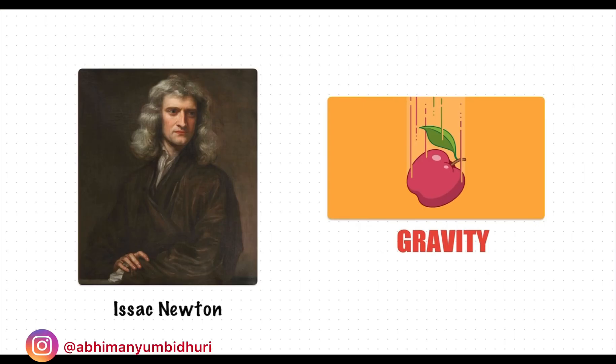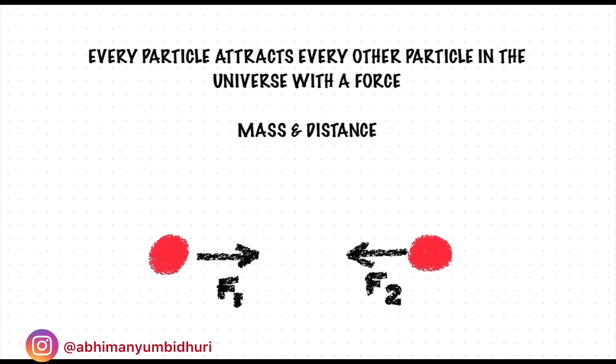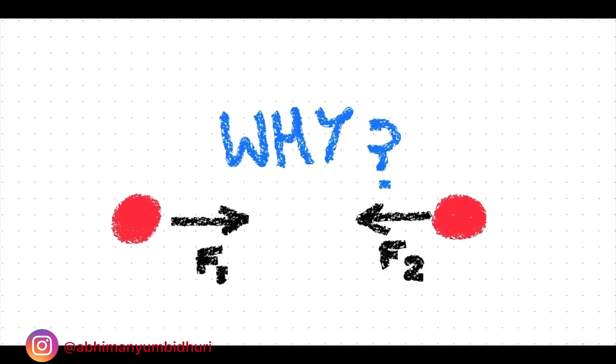First, let's understand how Newton described gravity. Newton states that every particle attracts every other particle in the universe with a force. This force is called gravity, which roughly depends upon the mass of the object and the distance between the objects. But he did not explain why this gravity works.